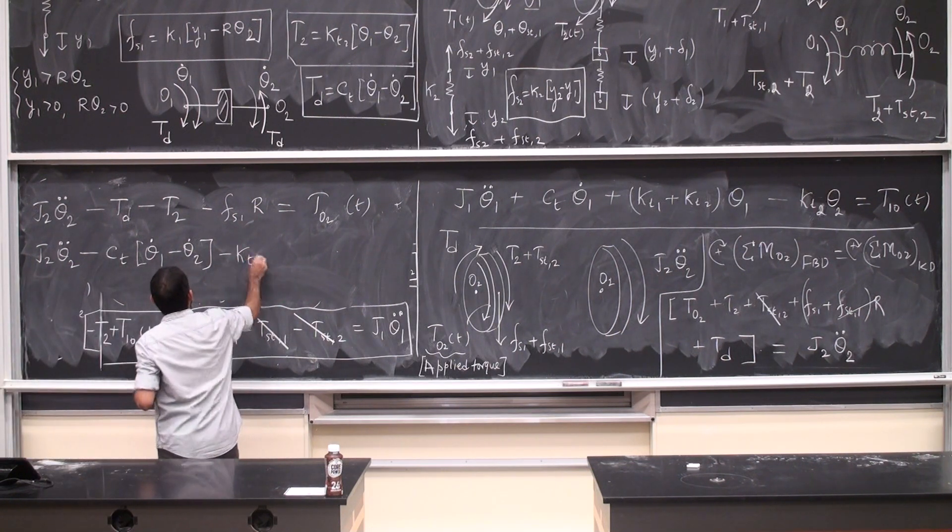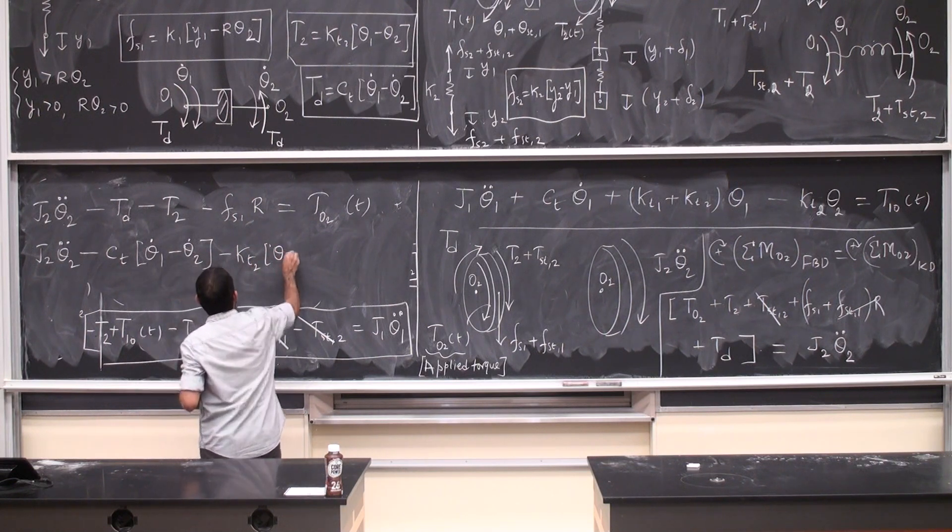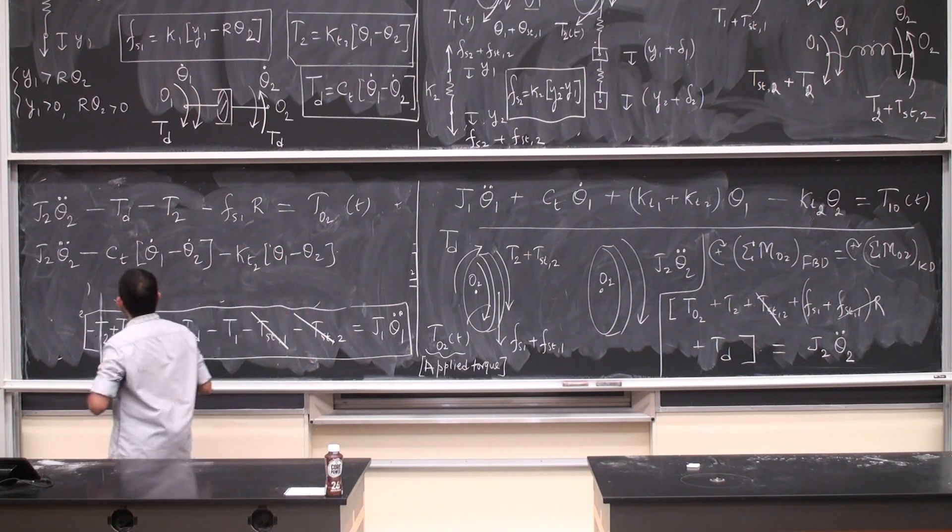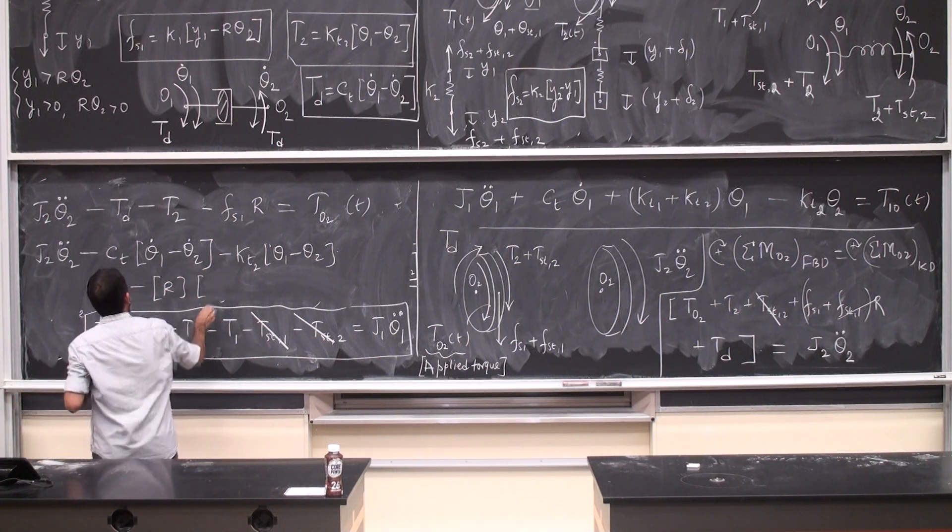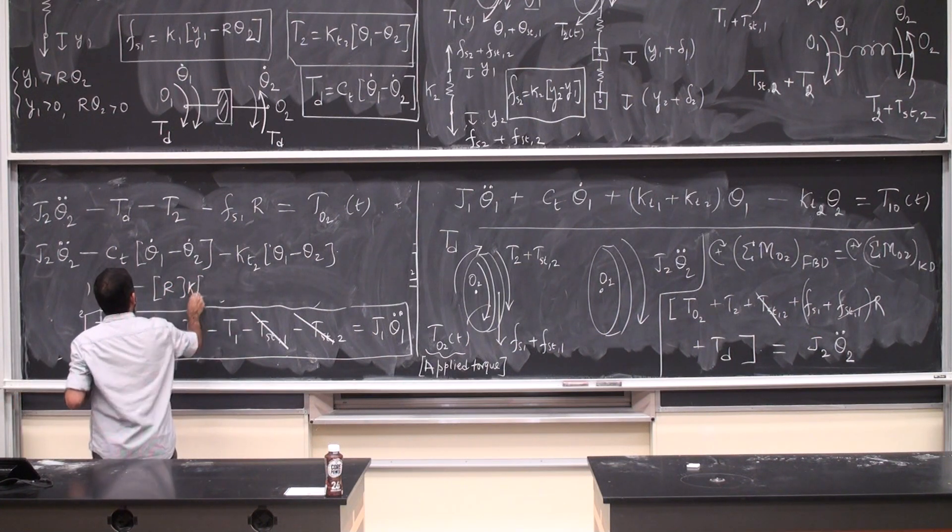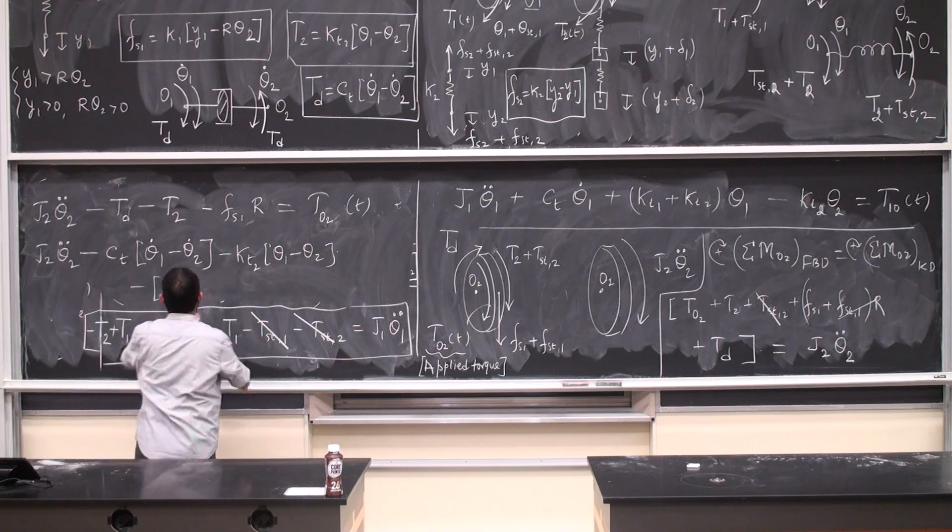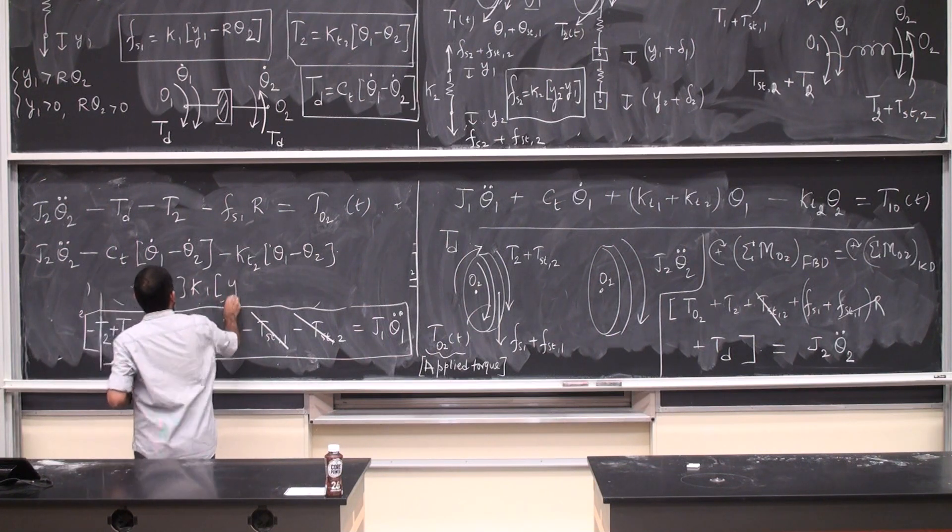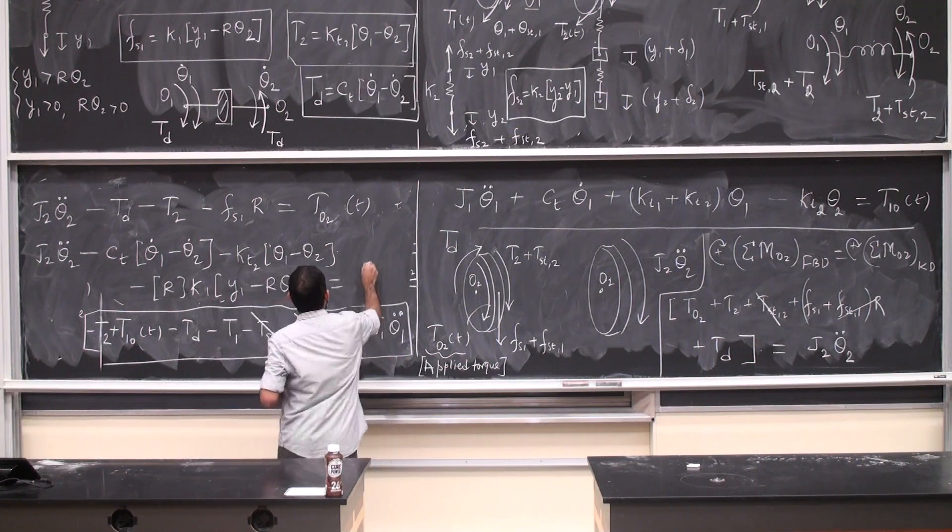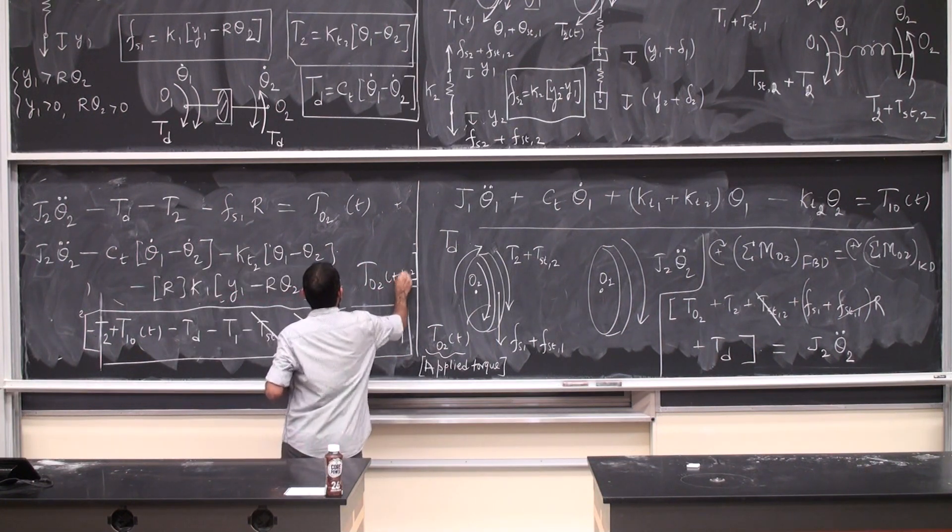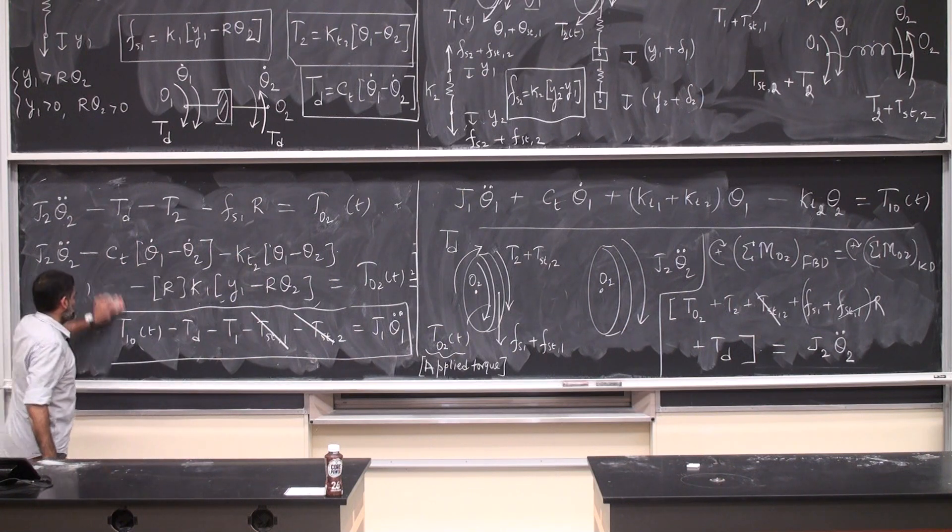And typically we always deal with stable systems in 3260 unless otherwise mentioned. So this is the case. Last one. K T 2. K T 2. And then I have R times. K T 2, K T 1. This is equal to T 2.